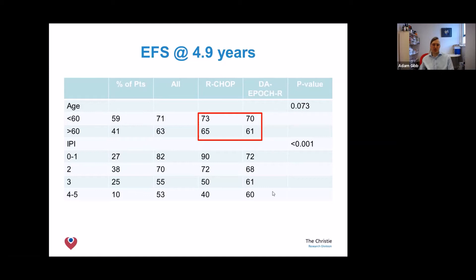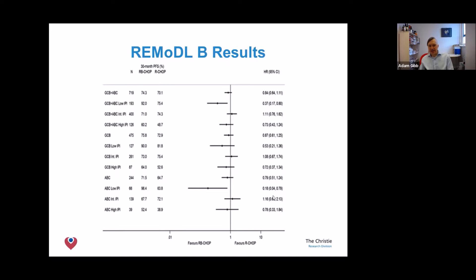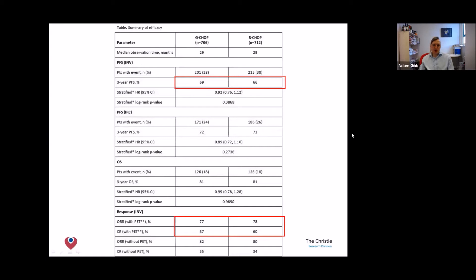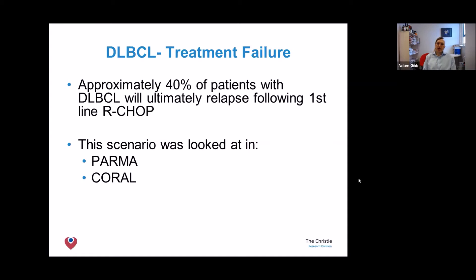UK researchers designed trials based on those ABC/GCB gene subtypes, adding new drugs into the R-CHOP mix — again, typically no better and no worse. Then Roche, recognizing their rituximab patent was running out after 20 years, developed a new antibody called obinutuzumab (G). A G-CHOP versus R-CHOP trial again showed no difference in survival at three years. Sadly, up to 40 percent of patients still relapse after R-CHOP, and two decades of trials have not moved the needle.